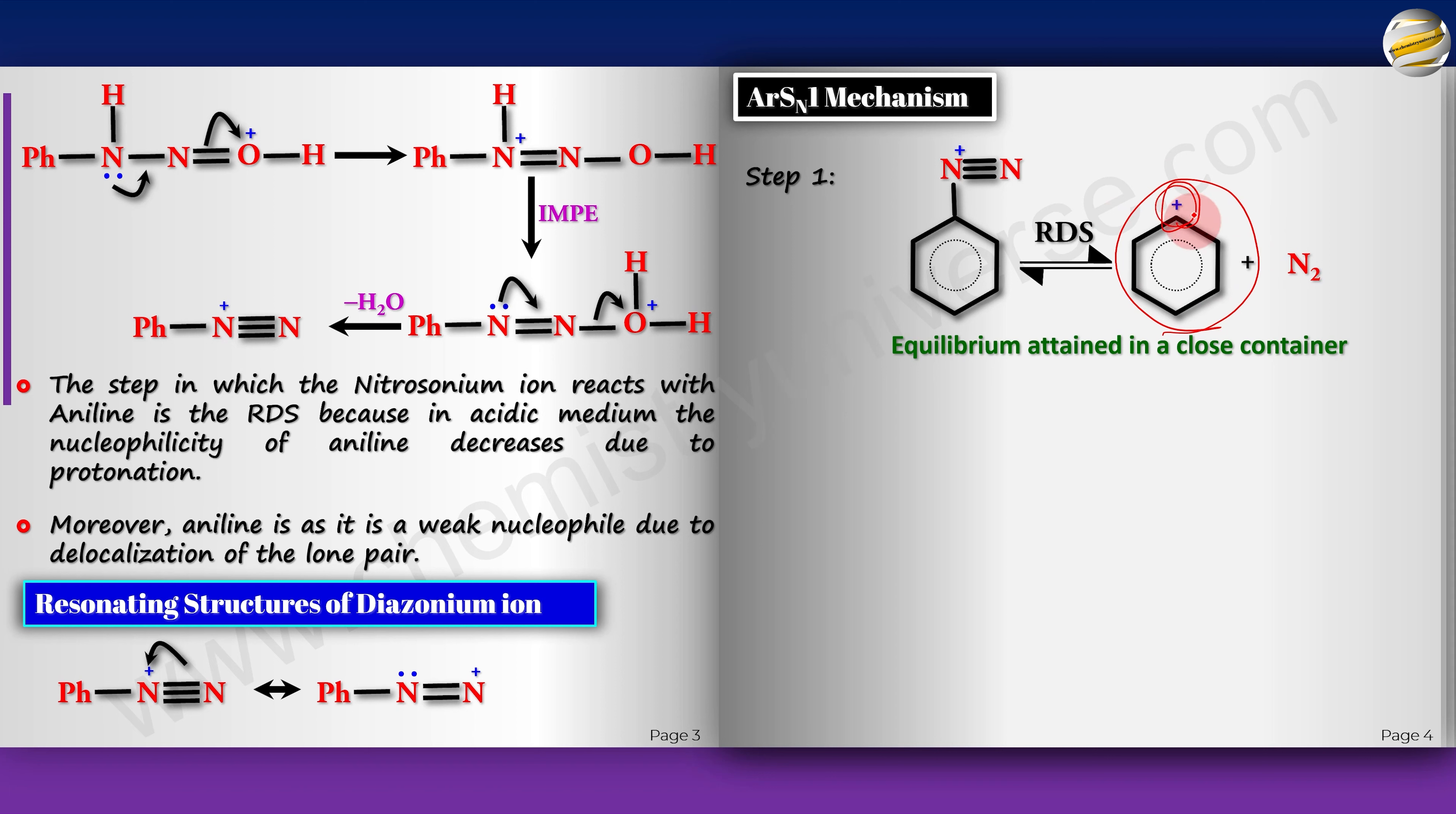In step two, this will be attacked by the nucleophile pretty fast and you get the product, nucleophilic substitution. As you can see, the more stable this becomes with the groups attached to it, the more would be the rate of ARSN1 because that is the RDS. The rate of ARSN1 is directly related to the stability of aryl carbocation.